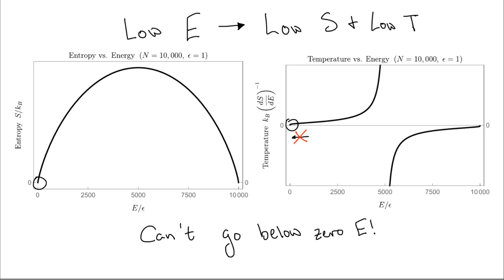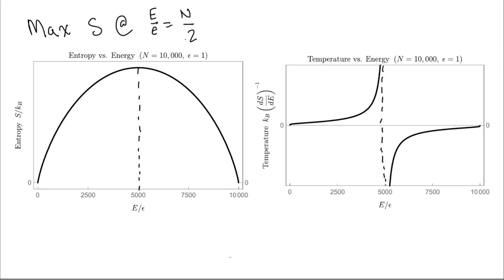The entropy of the system is maximized when we have the same number of particles in an excited state as in the ground state. In other words, there are the largest number of available microstates when a system of n particles has n over 2 units of energy. Looking at the plot of temperature, this corresponds to a formally infinite temperature. All this is saying is that if we allow the system to freely give or take as much energy as it wants, it will tend to end up with n over 2 units of energy in it.